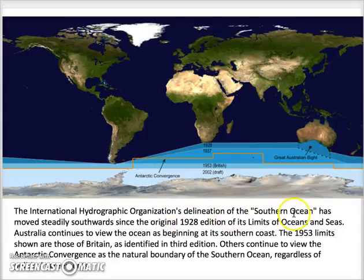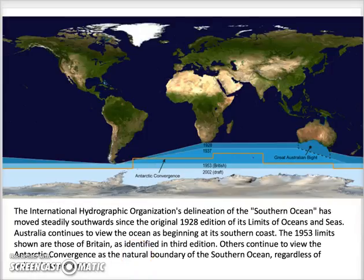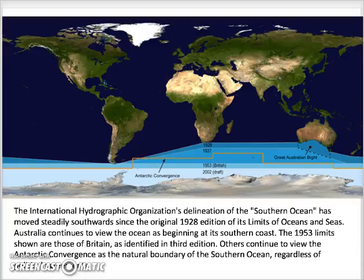The International Hydrographic Organization's delineation of the southern ocean has moved steadily southwards since the original 1928 edition of its limits of oceans and seas. Others continue to view the Antarctic Convergence as a natural boundary of the southern ocean, regardless of political agreements.